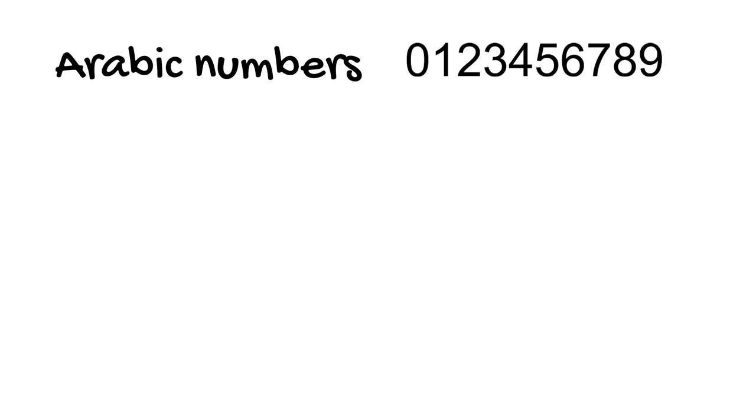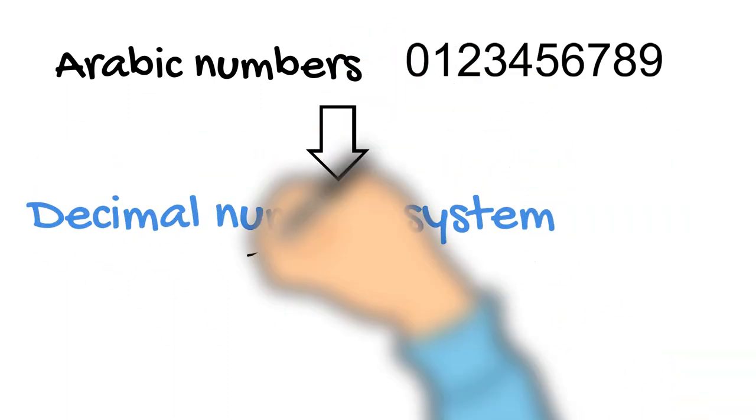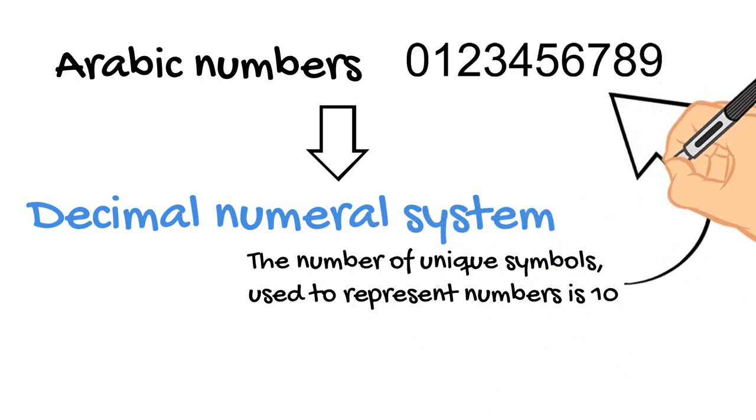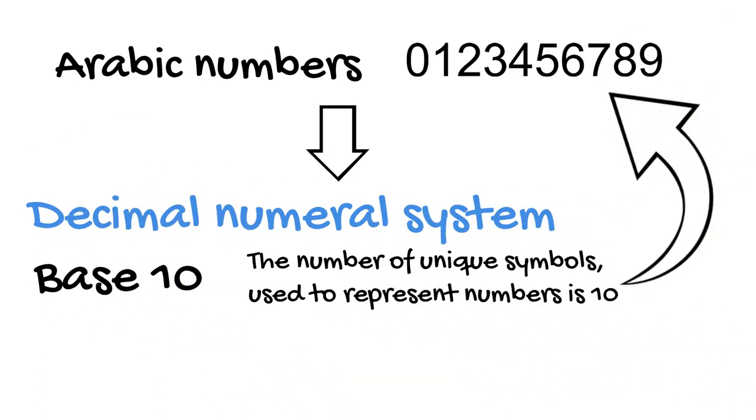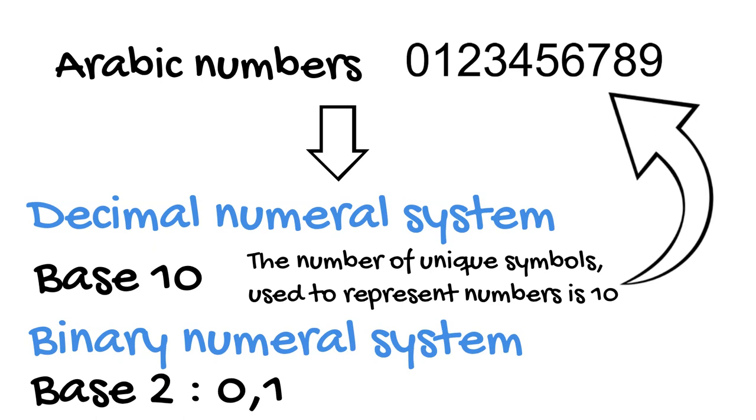The one used in everyday life is the decimal numeral system, referring to the fact that the number of unique symbols used to represent numbers is 10. However, the Arabic numbers can be used as a basis for other numeral systems, for instance binary, where two unique symbols are used: 0 and 1.